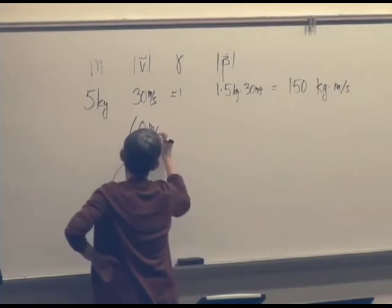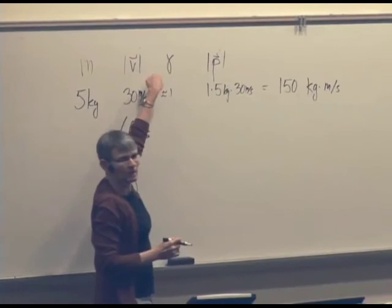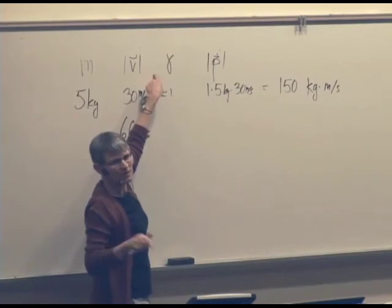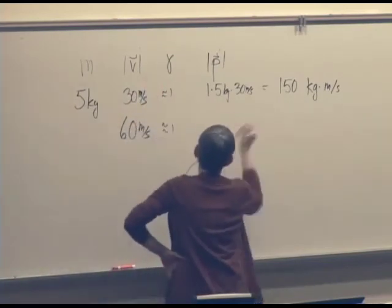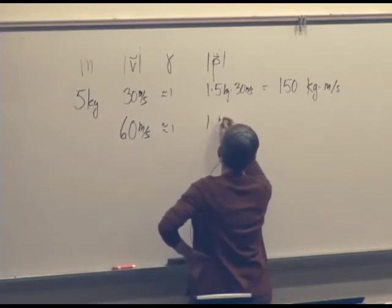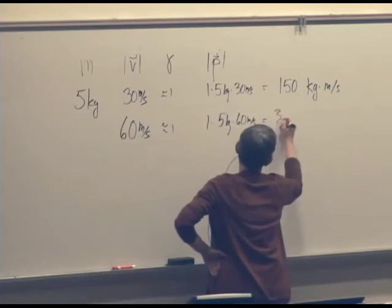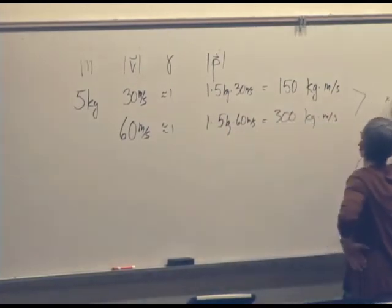Let's double the speed. 60 meters per second. Since we had 1 minus 10 to the minus 14th, this is still going to be approximately 1. So this is going to be 1 times 5 kilograms times 60 meters per second. 300 kilogram meters per second. That's a factor of 2.